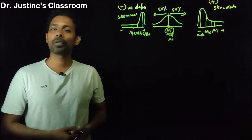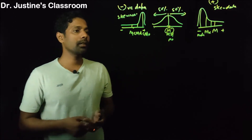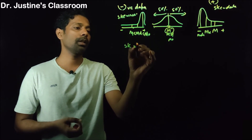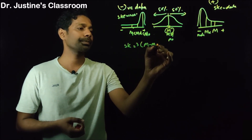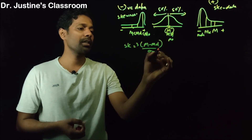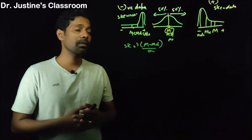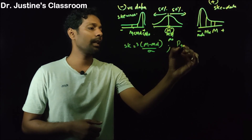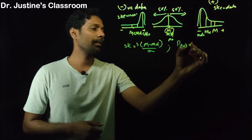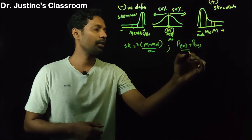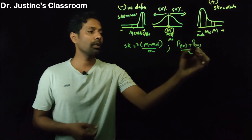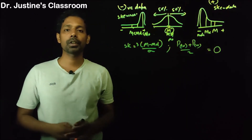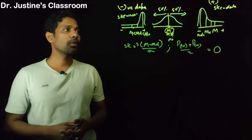Skewness is a very important characteristic. The equation for skewness is: SK = 3 times (mean minus median) divided by standard deviation. Another indicator of skewness uses percentile values: (P90 + P10) divided by 2. If the skewness score is near zero, that indicates the data is symmetrical and could be considered a normal curve.